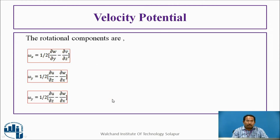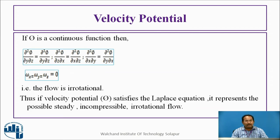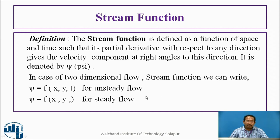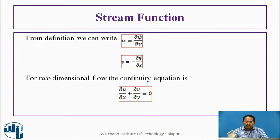Now, similarly, the stream function. What is the stream function? It is a function of space and time, particularly for 2D flow. It is such that its partial derivative with respect to any direction gives the velocity component at right angles to that direction. It is denoted as psi (ψ). For two-dimensional unsteady flow, ψ is a function of x, y, t; for steady flow, ψ is a function of x, y only. Phi and psi — velocity potential and stream function respectively — you have to keep that in mind.